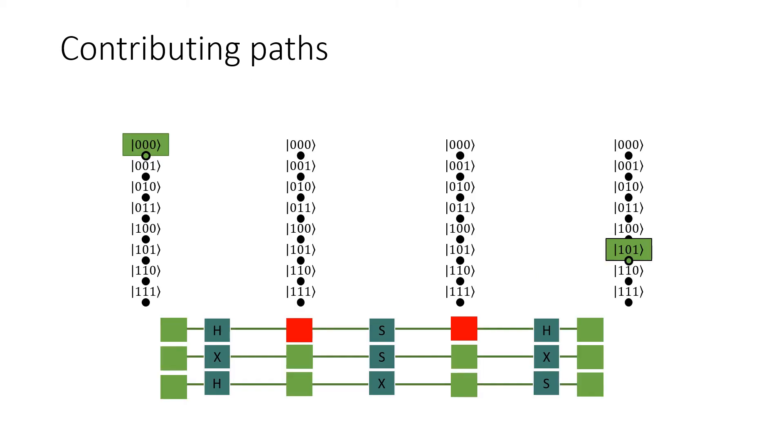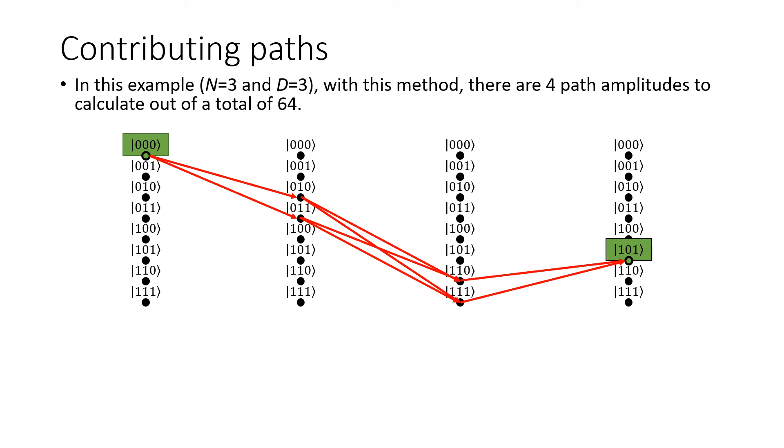Finally, we iterate over all possible values for the intermediate states that are painted red. In this example, there are only two. This means there are no more than 2 to the power of 2 paths that contribute to the overall amplitude, out of a total of 64.